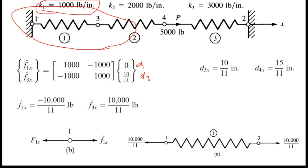Since node 1 is fixed, there is no displacement, so I wrote 0 in that space. When we talk about d3, we found it before — d3x equals 10/11 inches.